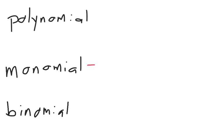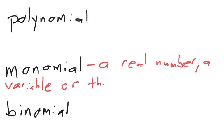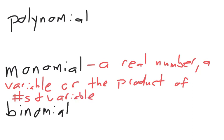So I'm going to start with what a monomial is. A monomial is a real number, a variable, or the product of numbers and variables. Does everybody know what a number is? Hopefully so. Does everybody remember what a variable is?